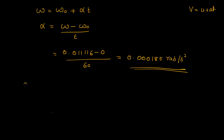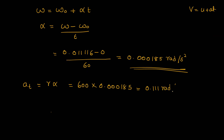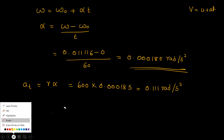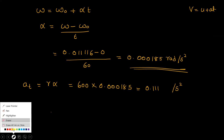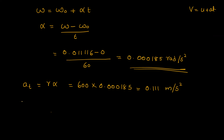The tangential component of acceleration is at equals r times alpha. That is 600 multiplied by 0.000185, which equals 0.111 metres per second squared. The normal component an equals v squared divided by r.